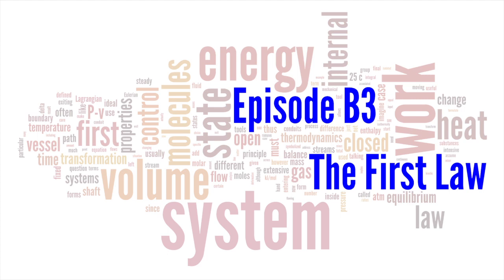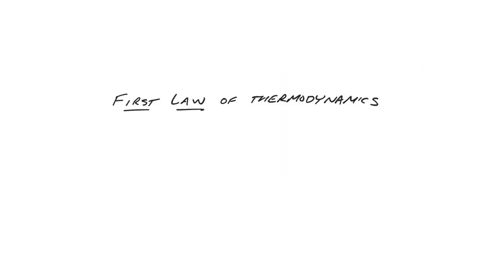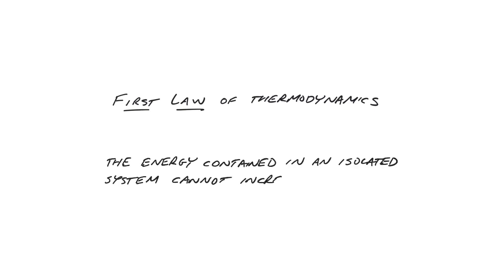The basic principle that allows us to do this is called the first law of thermodynamics. In short, the first law states that the energy contained in an isolated system cannot increase or decrease. As you're already aware, we use this principle throughout chemical engineering for all kinds of things. The use of this principle for purposes of interrelating properties of a substance is called first law analysis.